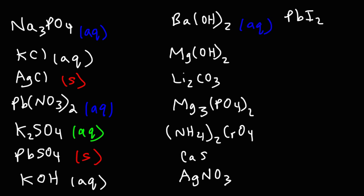Magnesium hydroxide is different. Magnesium and barium are both in the same column — Group 2 alkaline earth metals — but magnesium hydroxide is somewhat insoluble, so we write solid for that. Its solubility is very, very low in water. In fact, magnesium hydroxide is used as a laxative in the milk of magnesia product.